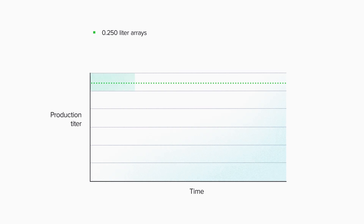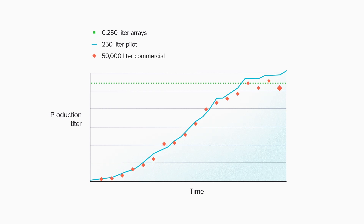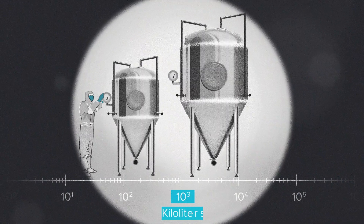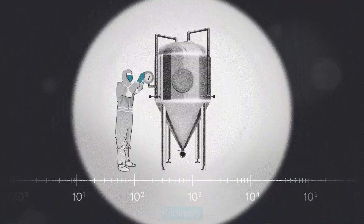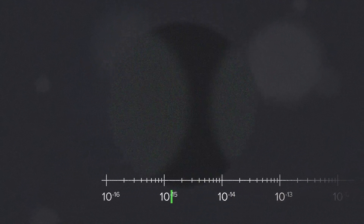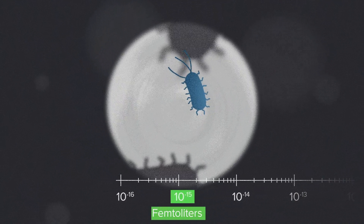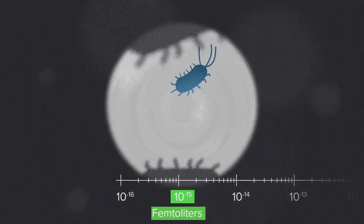Here's an example of the final steps of a successful bioproduction journey. We used the Amber 250 arrays to optimize a bioprocess. We measured the product titer first in a 250-liter pilot reactor, then again in the 50,000-liter reactor for true commercial scale. That's a 200x difference in volume, but the titer was consistent across all three systems. From a 50-femtoliter living cell to a 50,000-liter bioreactor — that's about 18 powers of 10. For the cells, it's not really a big deal; it only takes a few days of exponential growth for them to fill up all that space.